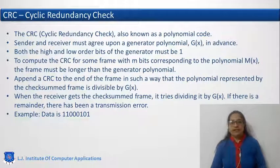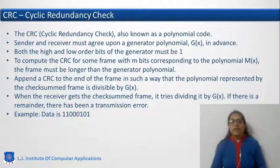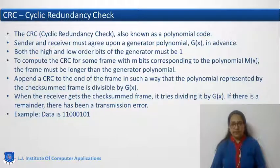Let us discuss another technique: Cyclic Redundancy Check, or CRC. In this technique, the data bits are divided using a polynomial generator. There is a polynomial equation which we convert into binary form, and that bit sequence is used as the generator. The sender and receiver agree upon the same generator. The sender divides the data bits using that generator, and the remainder bits are called cyclic redundant bits — CRC. The data with the CRC bits is then sent.